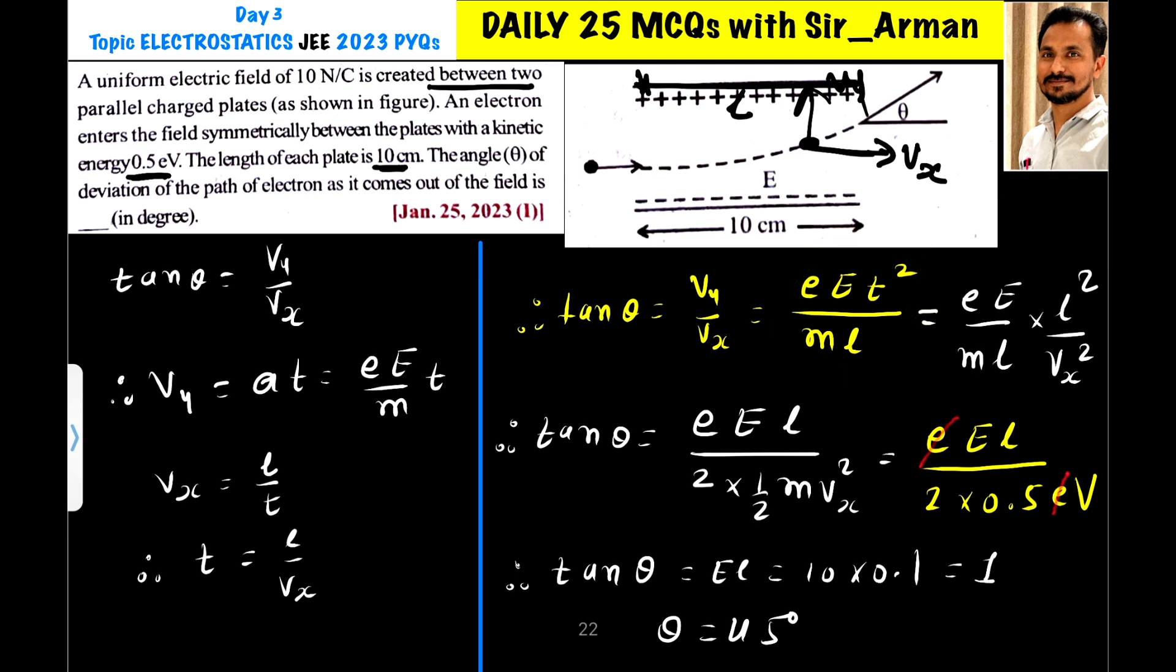Now what I have done here, I have used this t. I have made t again here subject to make it more simpler. So instead of t I have used l by vx. So here we have t squared. So t squared is l squared by vx squared.